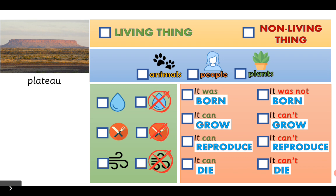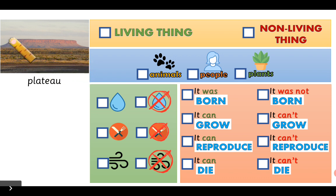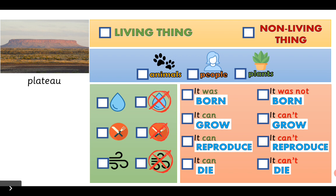Now, the first thing we're going to do is a description, an analysis of one thing. In this case, we have this thing, which is a plateau. Remember? This is a plateau. It's like a mountain, but it's not a mountain — it's a plateau. It's flat here. And you have to tell me if this plateau is a living thing or a non-living thing.